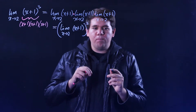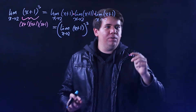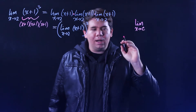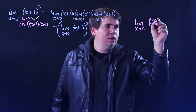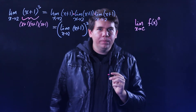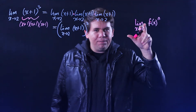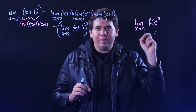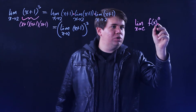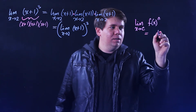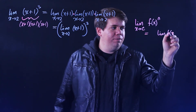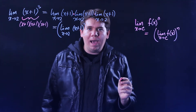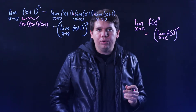This is an example of a more general law. Whenever you have the limit as x approaches some constant of a function to a power, you can think of that as f times f times f, n times. You can break that up as the limit of f times limit of f, n times, which comes out to be the limit of f as x approaches c, to the nth power. I'll call this the power rule.